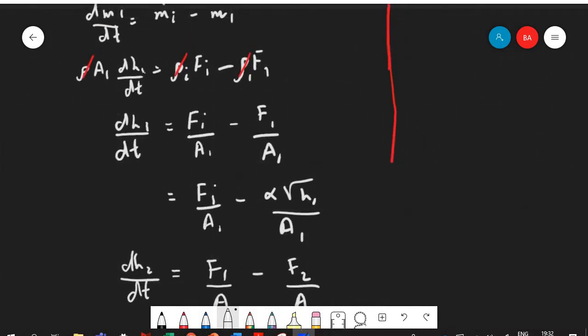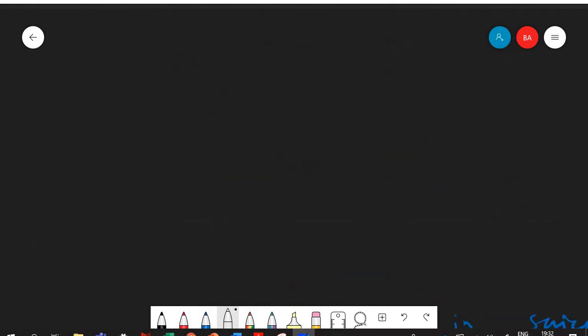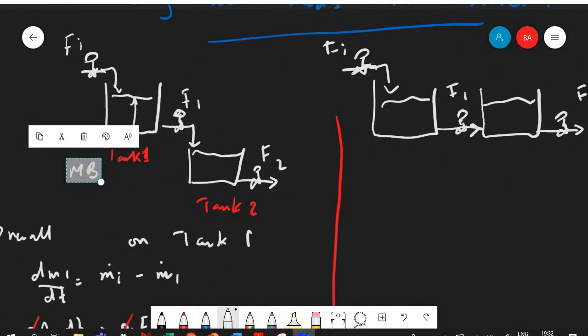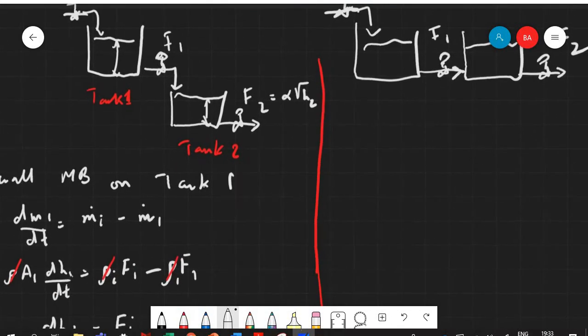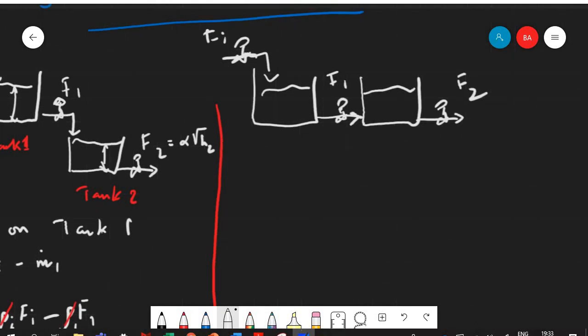And again F2, why did I say that F2 is equal to α square root of h2? Because this F2 is only a function of head pressure and the higher the head pressure I'm going to have more flow rate going out. So the equation looks very similar to what we have solved before except that you are having two tanks after each other.